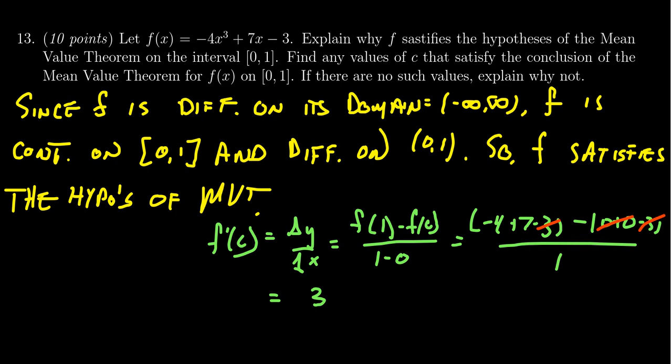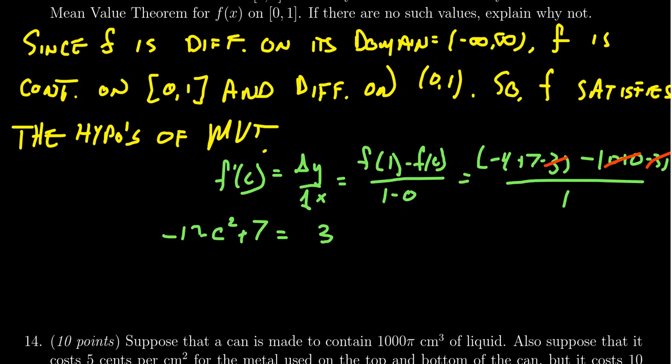So somewhere the derivative equals 3. But if I compute the derivative for the function I get -12c² + 7. So I have to solve for this equation. If I subtract 7 from both sides you get -12c² = -4. Divide both sides by 12, you get c² = 1/3. 4 goes into 12 three times of course.